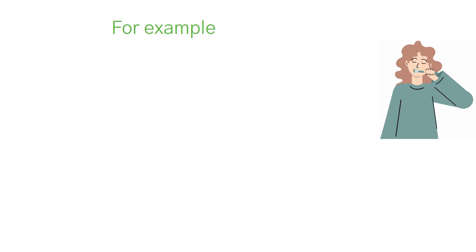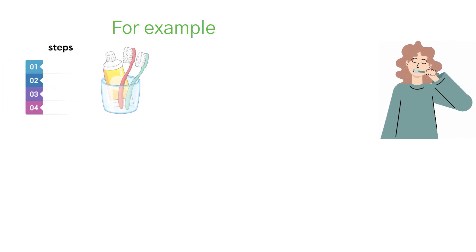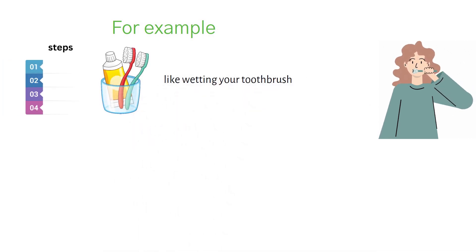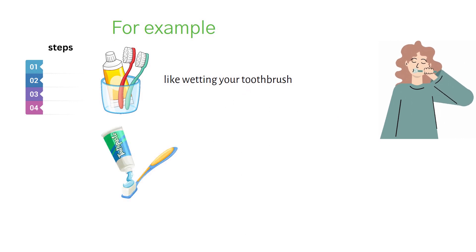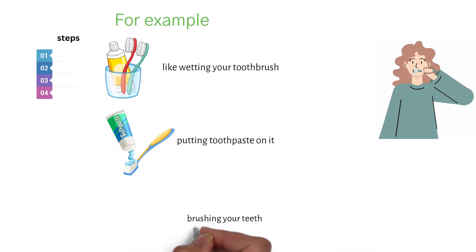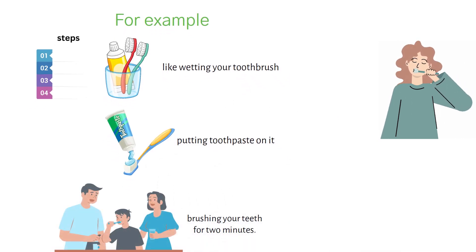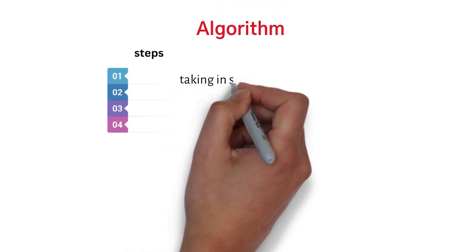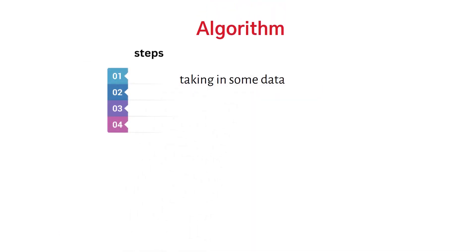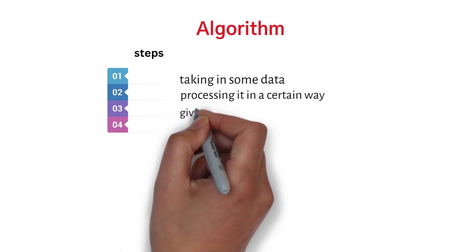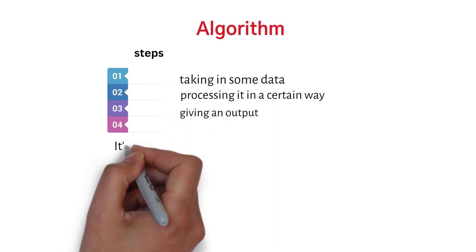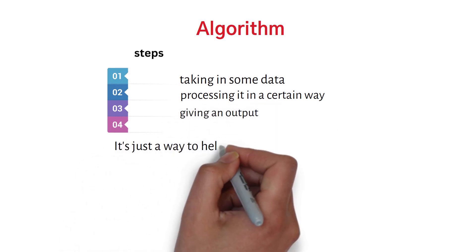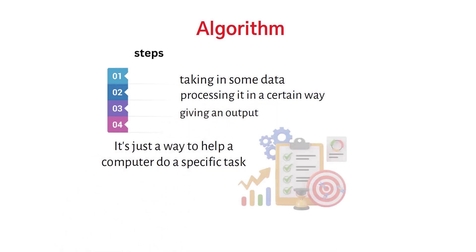For example, think of a simple task like brushing your teeth. You might have a set of steps you follow every time, like wetting your toothbrush, putting toothpaste on it, and brushing your teeth for two minutes. Similarly, an algorithm might have steps like taking in some data, processing it in a certain way, and then giving an output. It's just a way to help a computer do a specific task.